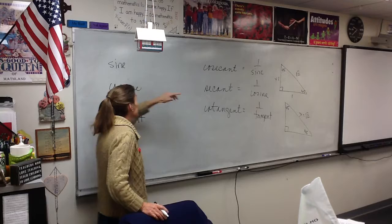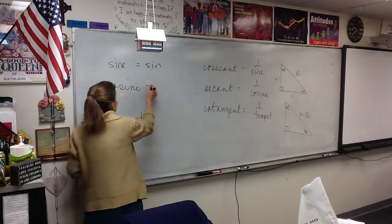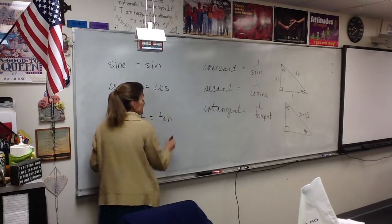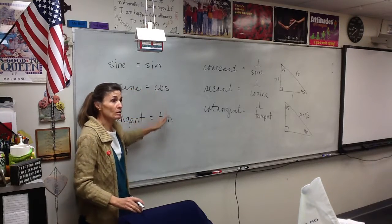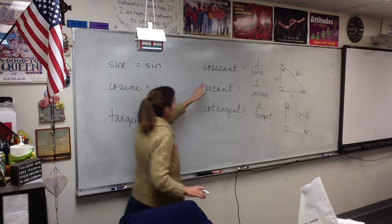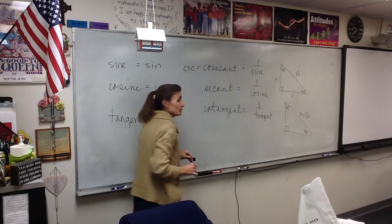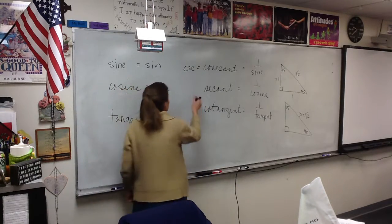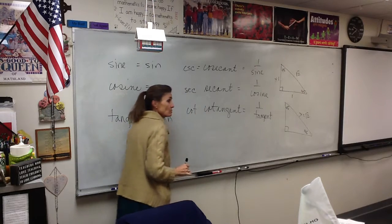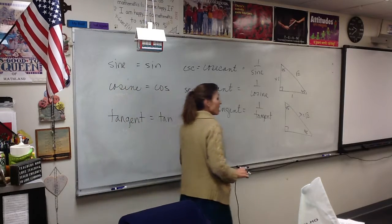Now, the abbreviation for sine is S-I-N. The abbreviation for cosine is C-O-S. And the abbreviation for tangent is T-A-N. Again, you're very familiar with those because they're on your calculator. You have those buttons. And the abbreviation for cosecant is C-S-C. Cosecant. Secant is S-E-C. And cotangent is C-O-T.